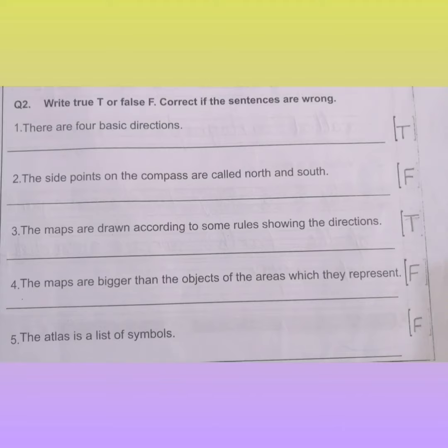Secondly, we will do question number 2 — write True (T) or False (F), and correct the sentences if they are wrong. Number 1: there are 4 basic directions — True. Number 2: the side points on the compass are called north and south — False. Number 3: the maps are drawn according to some rules showing the direction — True.